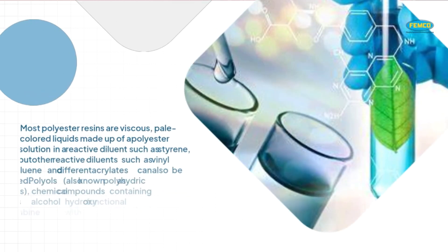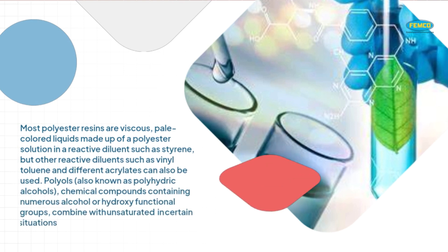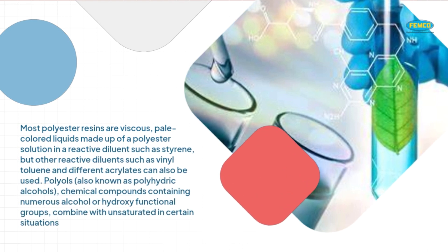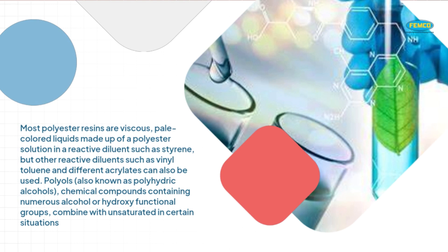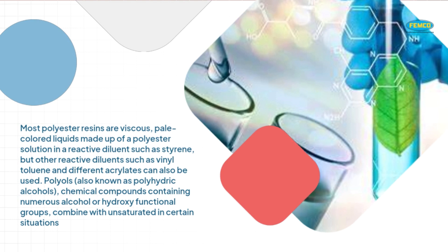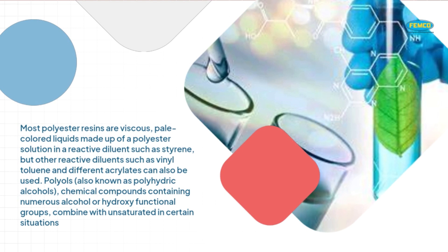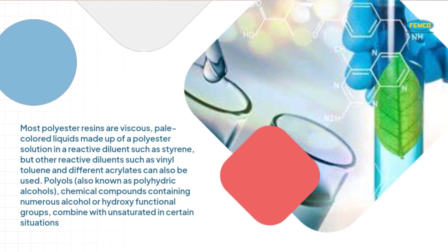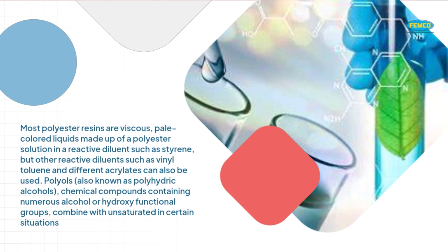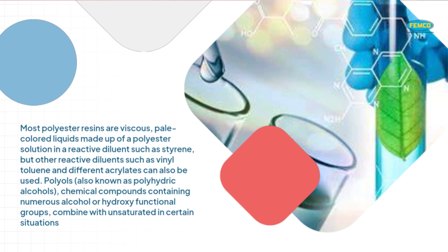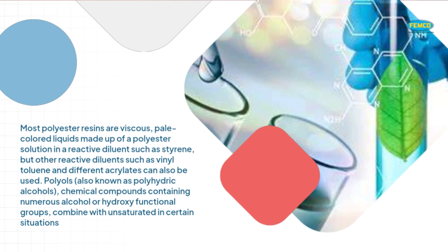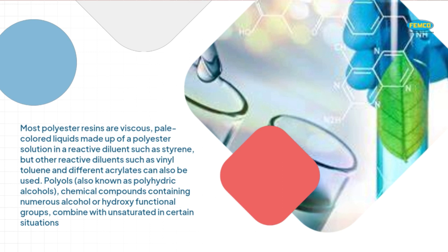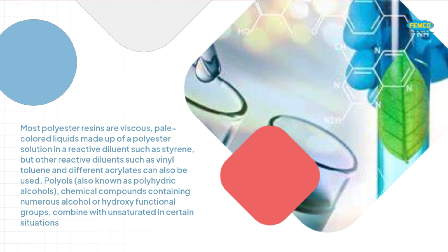Most polyester resins are viscous, pale-colored liquids made up of a polyester solution in a reactive diluent such as styrene, but other reactive diluents such as vinyl toluene and different acrylates can also be used. Polyols, also known as polyhydric alcohols — chemical compounds containing numerous alcohol or hydroxy-functional groups — combine with unsaturated and, in certain situations, saturated dibasic acids to generate unsaturated polyesters.